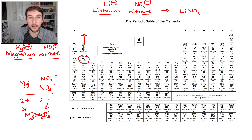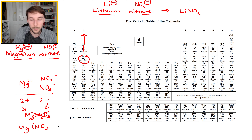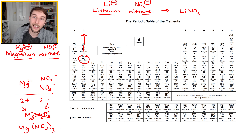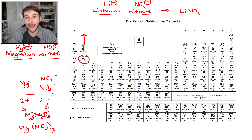When you have more than one of a compound ion, you must put it in brackets to show that. So magnesium nitrate is Mg(NO3)2 — the compound ion is bracketed and the number of that ion goes outside, bottom right of the brackets.